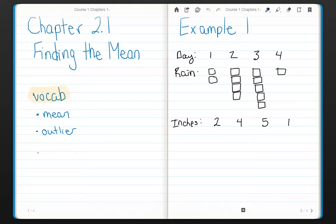Example 1. On 4 days, it rained 2 inches, 4 inches, 5 inches, and 1 inch. Find the Mean amount of Rain. So there are two different options that we have to do this.